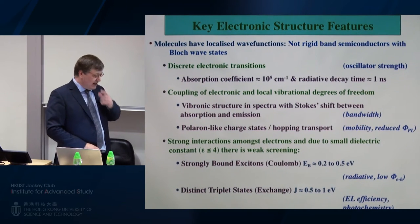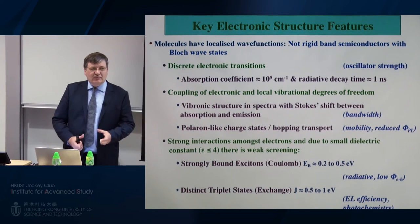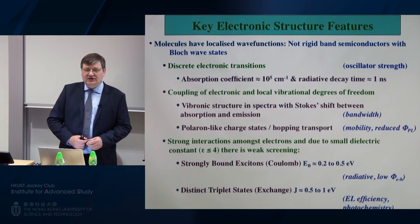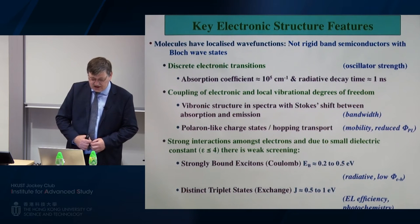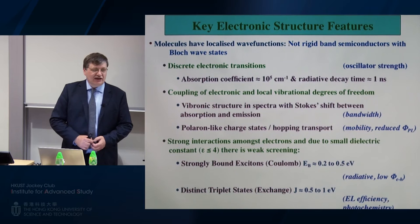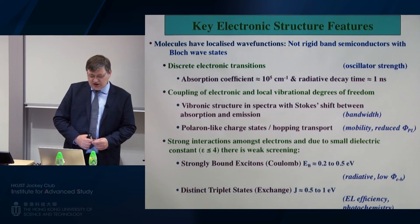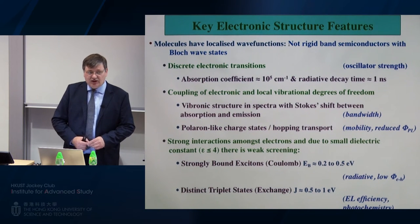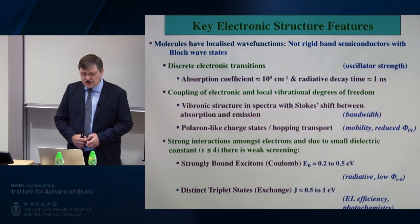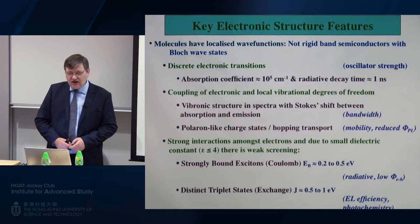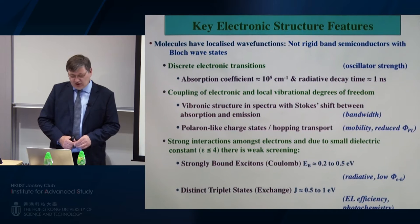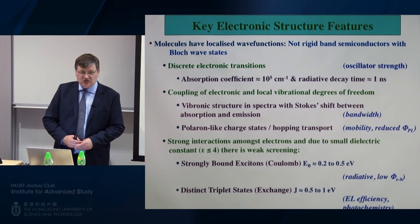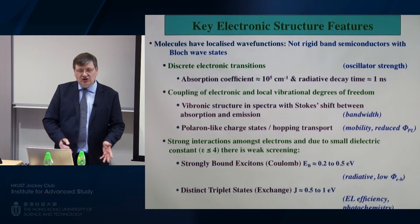What are the key electronic structural features? Within the molecular unit, the wave function is localized. We don't have rigid band semiconductors with Bloch wave states but discrete electronic transitions, giving rise to large oscillator strengths. Absorption coefficients are typically on the order of 10^5, compared to 10^3 in silicon. Radiative decay times are typically around 1 nanosecond. There is also significant coupling between the electronic and local vibrational degrees of freedom - we see this in the spectral line shapes as vibronic peaks, and a significant Stokes shift between the absorption maximum and emission maximum. This vibronic structure gives a large bandwidth useful for different colors or amplifying short pulses.